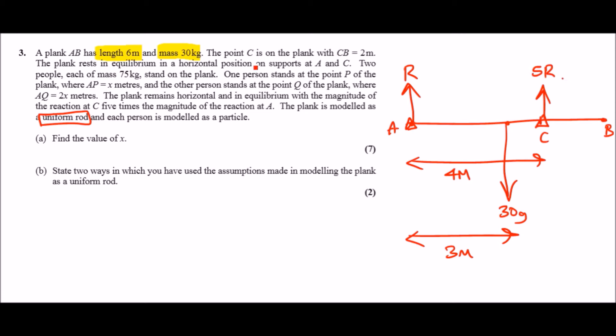Okay that's cool. Now let's carry on with what we left off. So two people, each of mass 75, stand on the plank. One person stands at point P where AP is x, and the other person's at Q where AQ is 2x. So we've got one guy x meters away and he weighs 75g, and another one, let's say over there, again 75g, and the distance here is 2x.